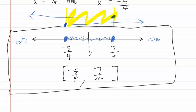As you can see, if you have absolute values that have not been isolated, you must isolate them first before determining whether it is an and or an or inequality. Then you solve as usual.